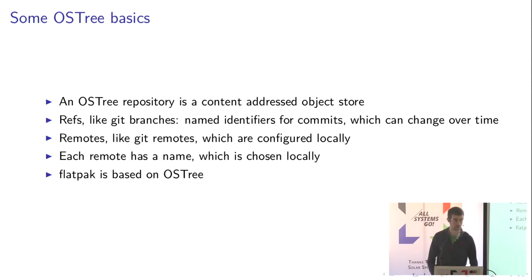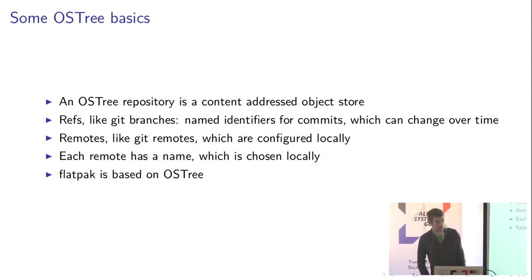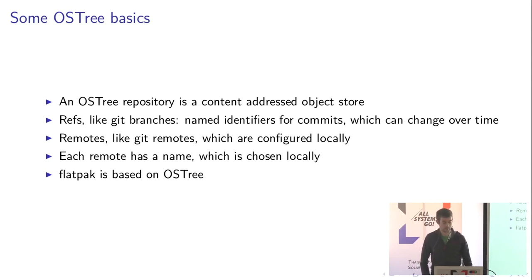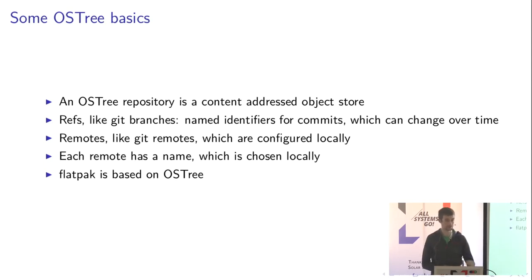OS tree is kind of the core of how this is all done — the core of how Endless OS and Flatpak are implemented. It is kind of like Git. It is a content-addressed file system where you dump files in, they are hashed by their content and stored at a path based on that. Each object can be a file, a directory tree that contains a hierarchy of files, or a commit object which contains some combination of files and directory trees.